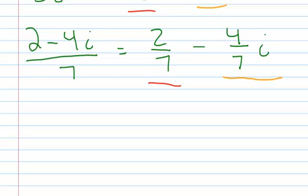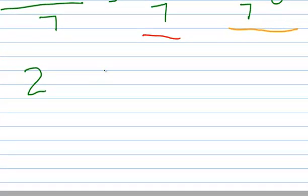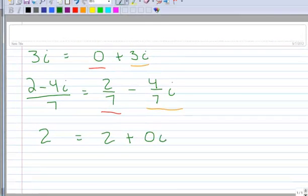Let's do another example. When I have the number 2, there's no i there, so it's definitely not the imaginary part. I can think of that as 2 plus 0i. So the real part is 2 and the imaginary part is 0i.